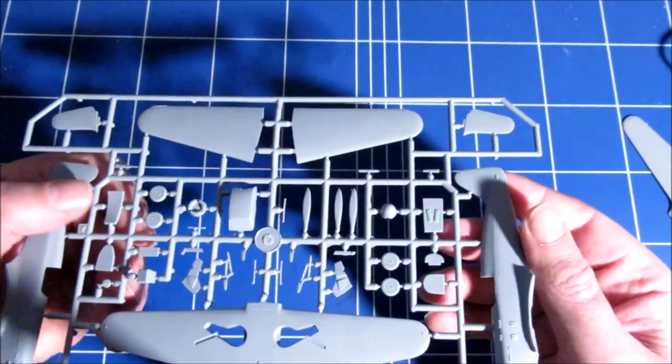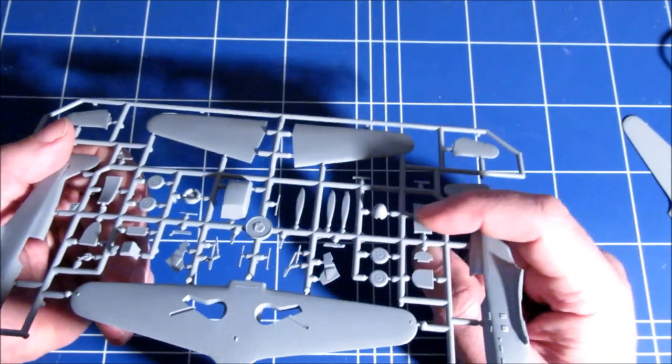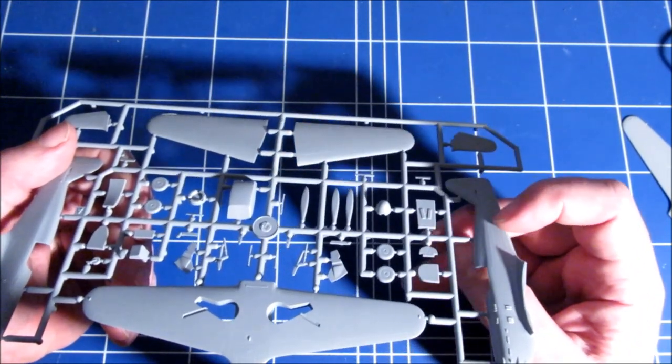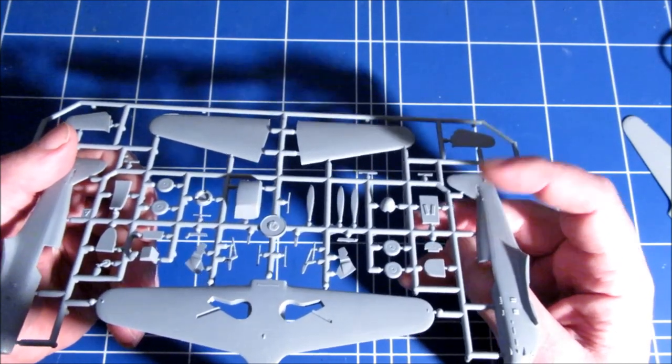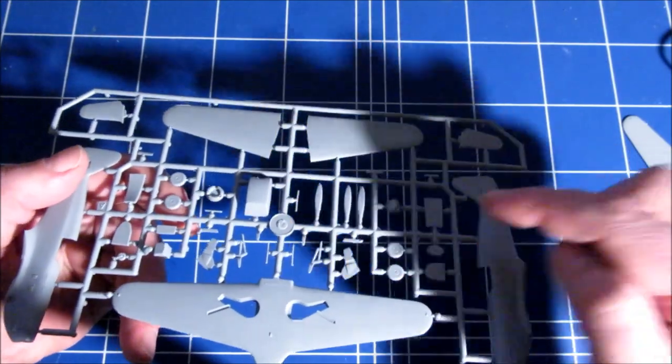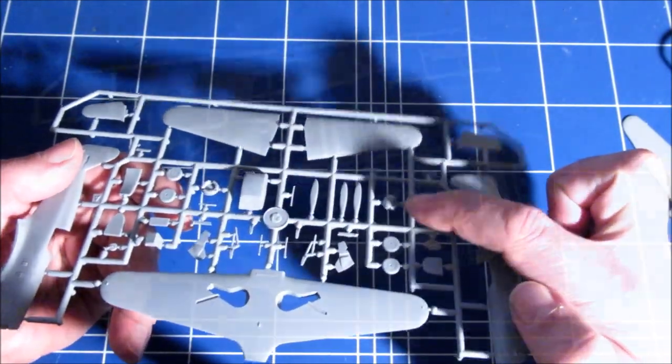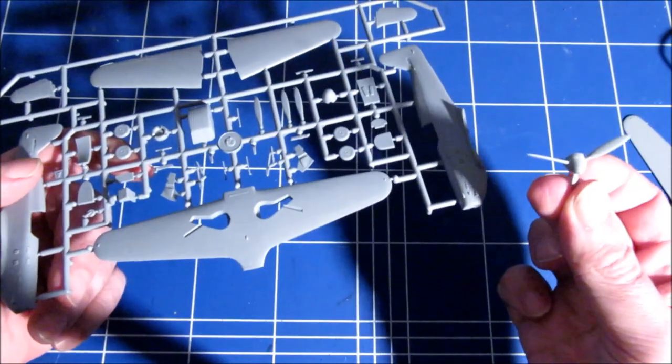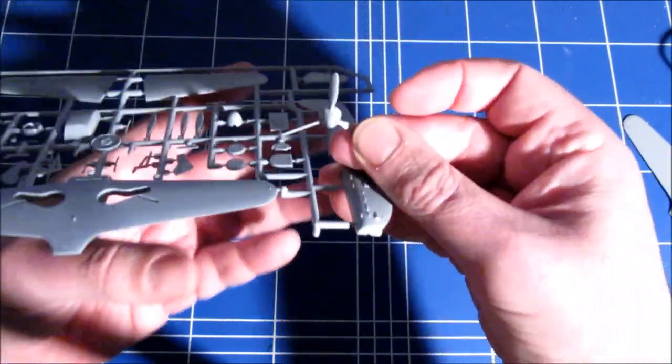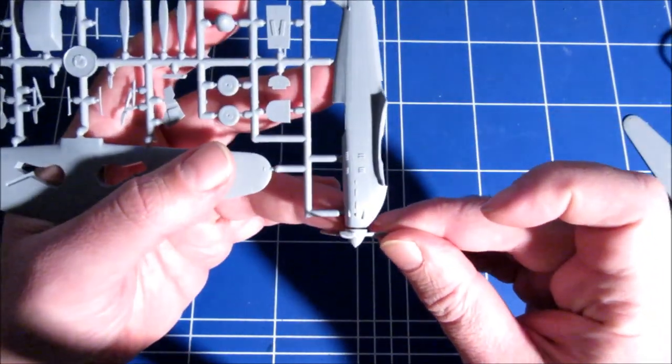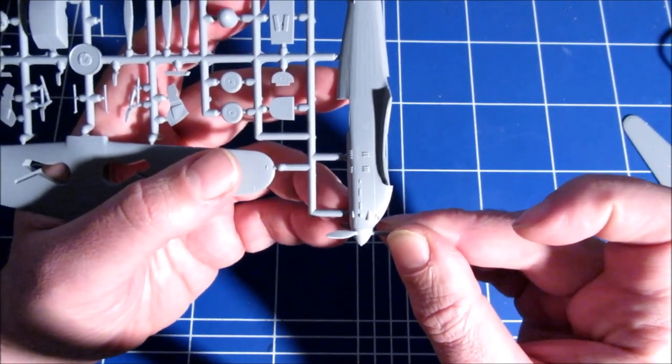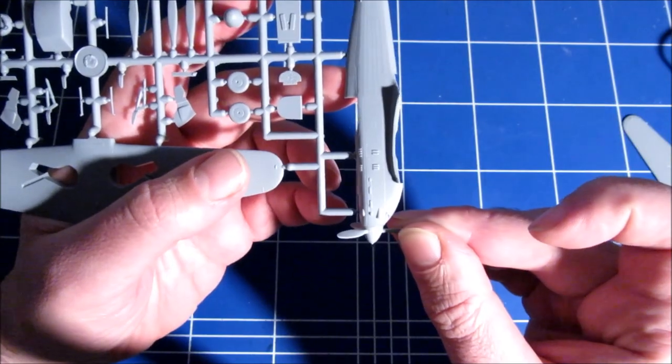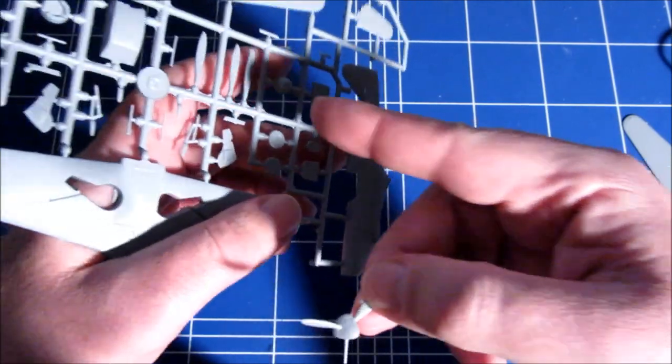So what I think I will do is take the spinner of a Yak-3, a Russian Yak-3 fighter, and make a copy of that in Milliput or something and use that as the spinner top. I mean, I have a Yak propeller here and I think if you fit it on there, it looks just perfect. Much better shape than this.